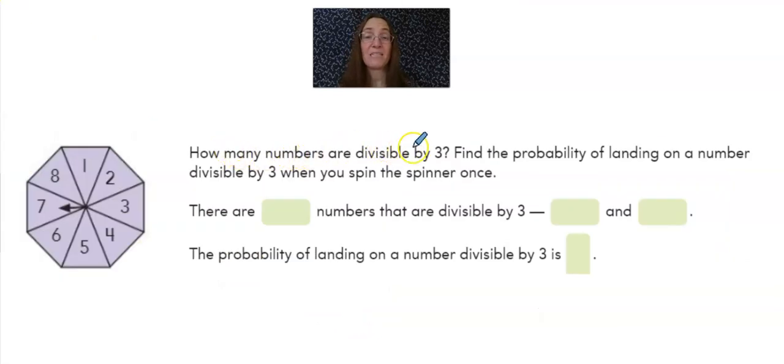How many numbers in the spinner are divisible by three? Find the probability of landing on a number divisible by three when you spin the spinner once. How many numbers are divisible by three?